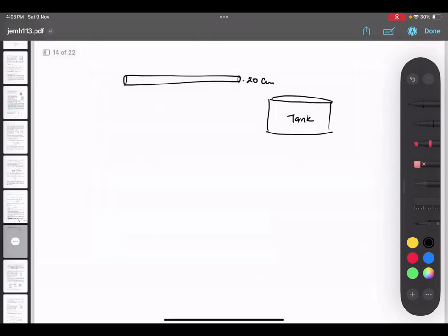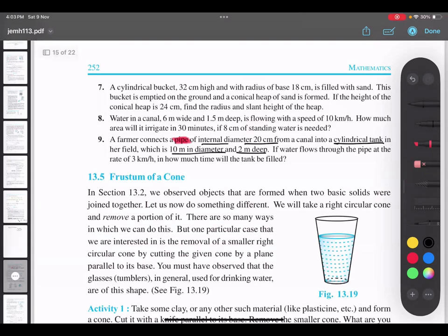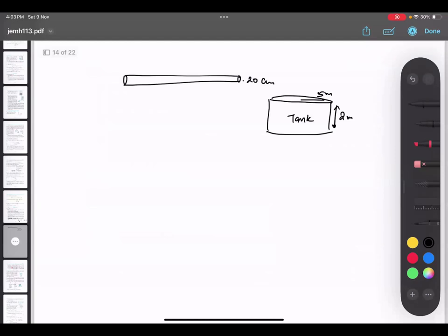10 meter diameter means 5 meter radius and 2 meter deep height. If water is flowing through the pipe at 3 kilometer per hour, how much time will it take to fill? So basically 3 kilometer per hour, that means in one hour it can cover 3 kilometer distance.